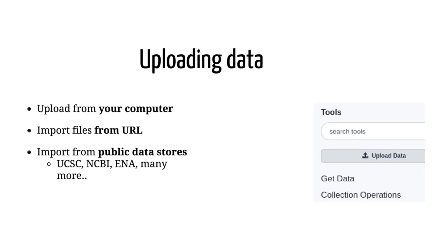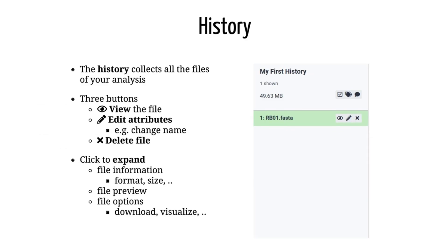The first step of an analysis is to get your data into Galaxy. This can be done in several ways: you can upload files from your computer, or you can enter an internet URL and Galaxy will download the data for you. Furthermore, Galaxy can import data directly from many online data stores such as UCSC, NCBI, and many more.